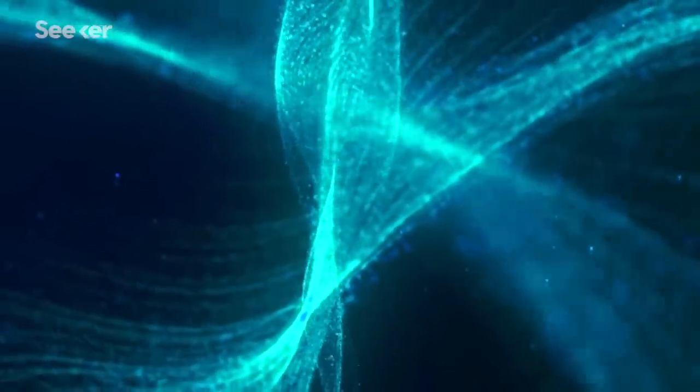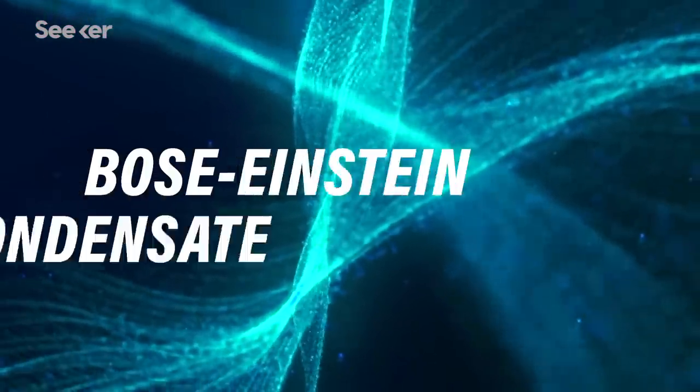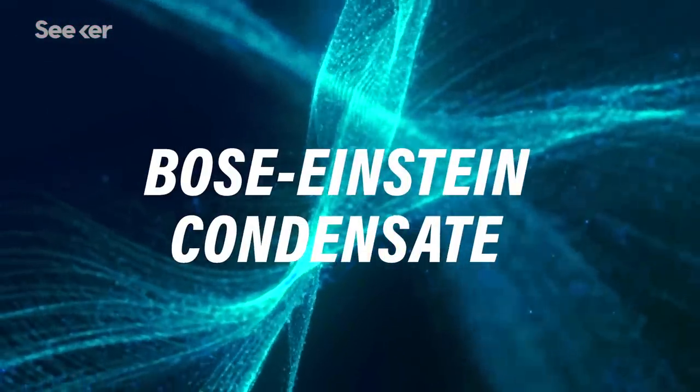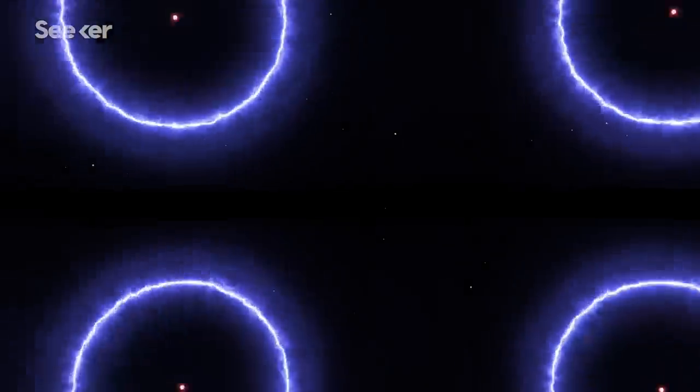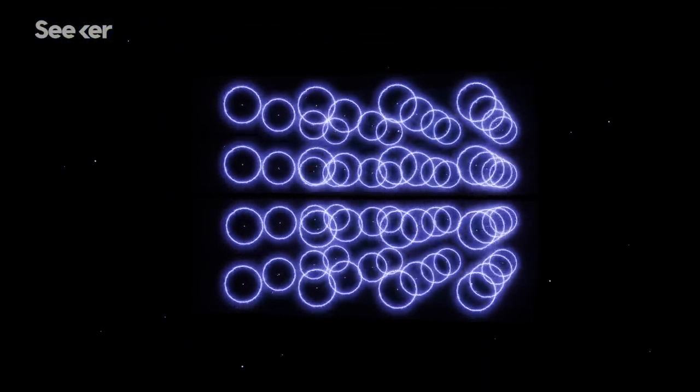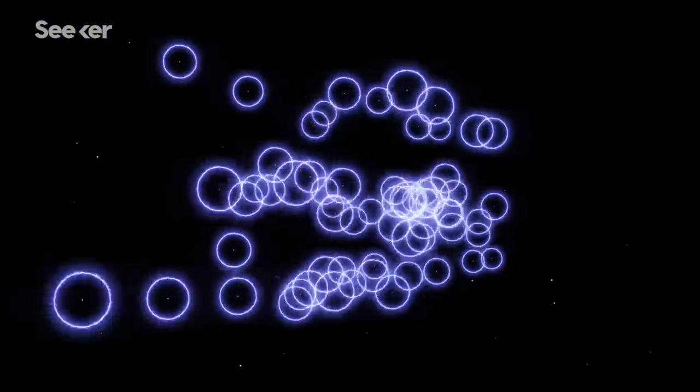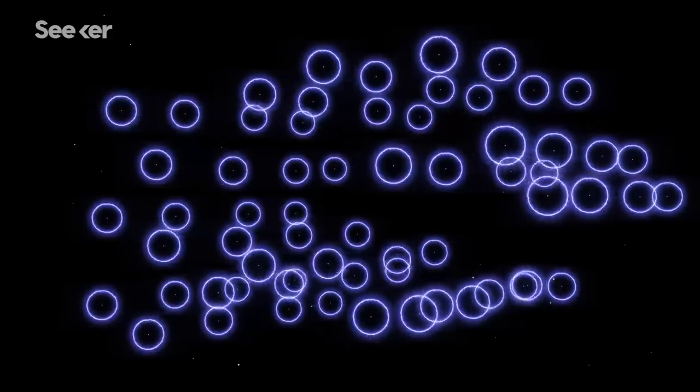When it gets this cold, a curious state of matter called a Bose-Einstein condensate comes into existence. This isn't your classic solid, liquid, or gas, but an ultra cool state of matter that behaves like a wavy super atom.